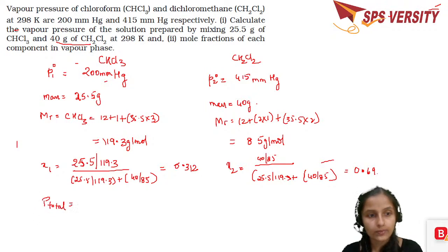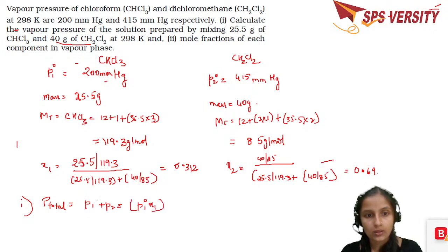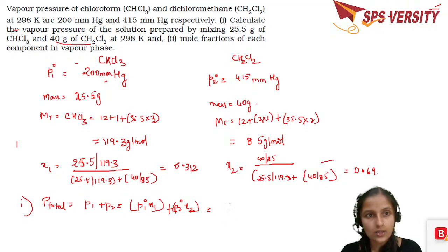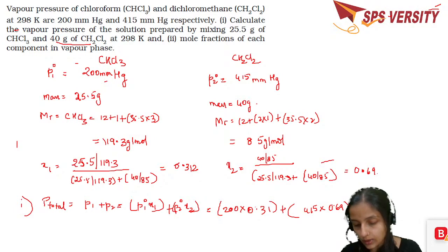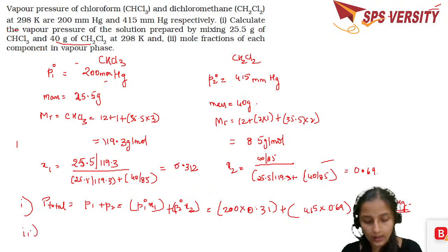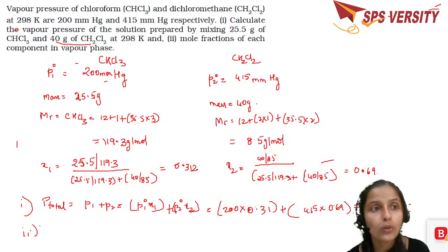Using x1 = 0.31 and x2 = 0.69, P total = P1°x1 + P2°x2 = (200 × 0.31) + (415 × 0.69) = 348 mmHg. This is the answer for the first part.